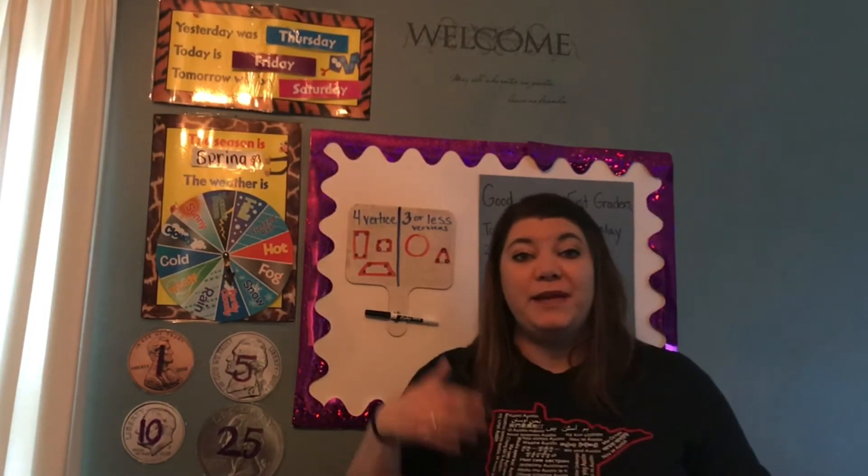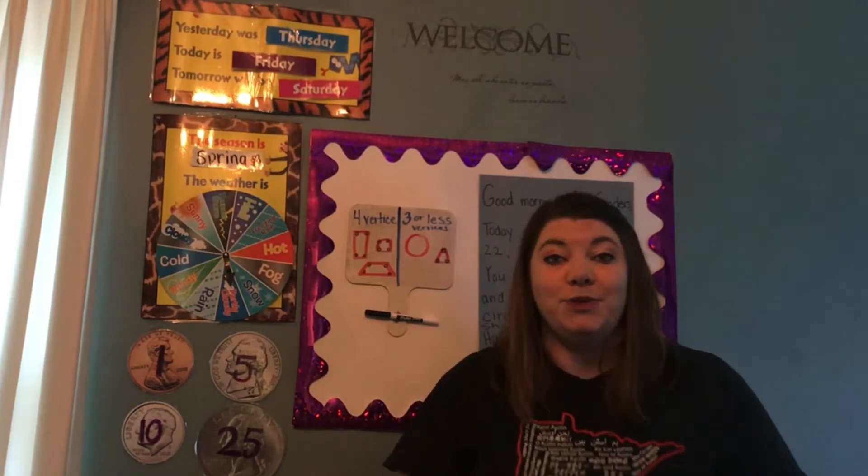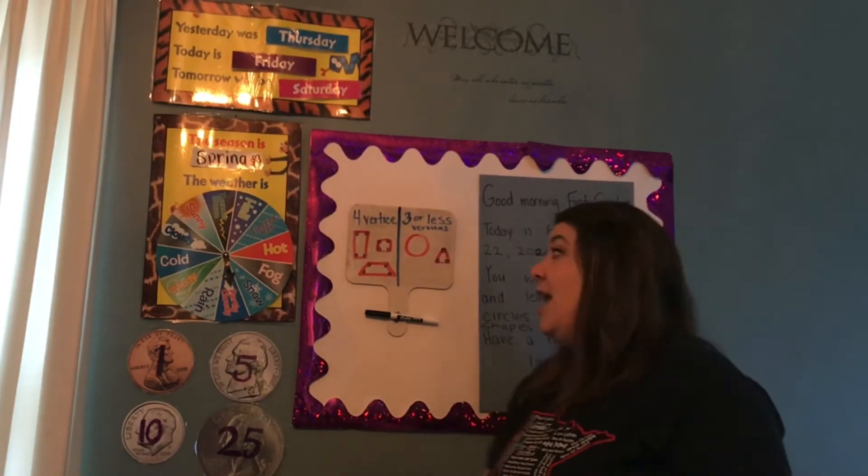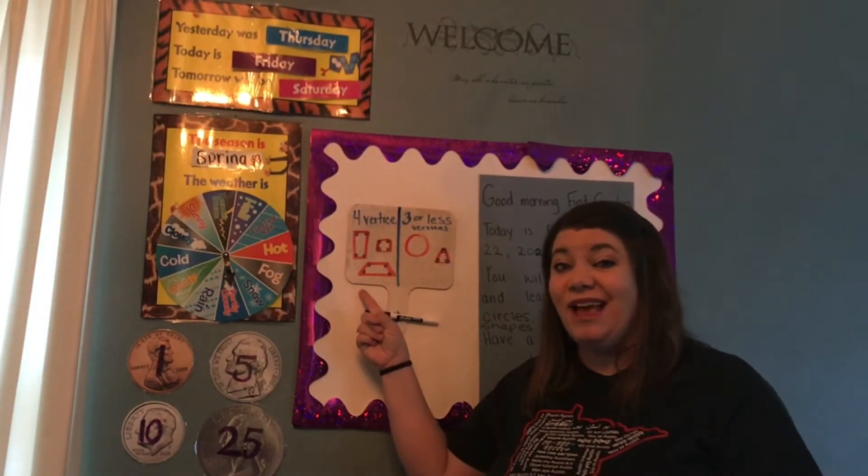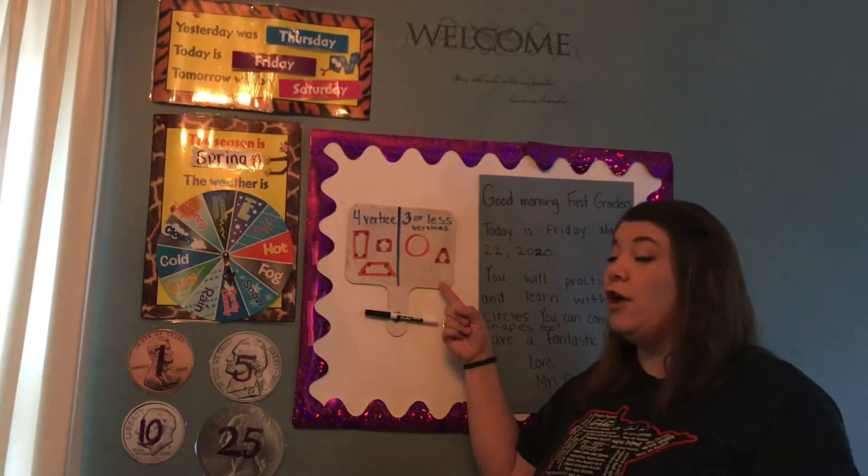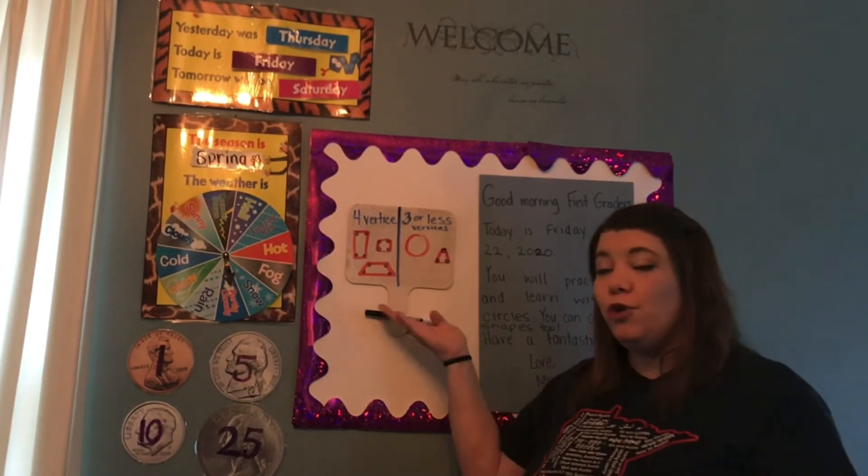You can compare shapes based on the vertices, just like I did up here. You could also do it with the sides. If I said to put all the shapes that have four sides on the left, and all the shapes that have three sides or less on the right, you can see that I did that.